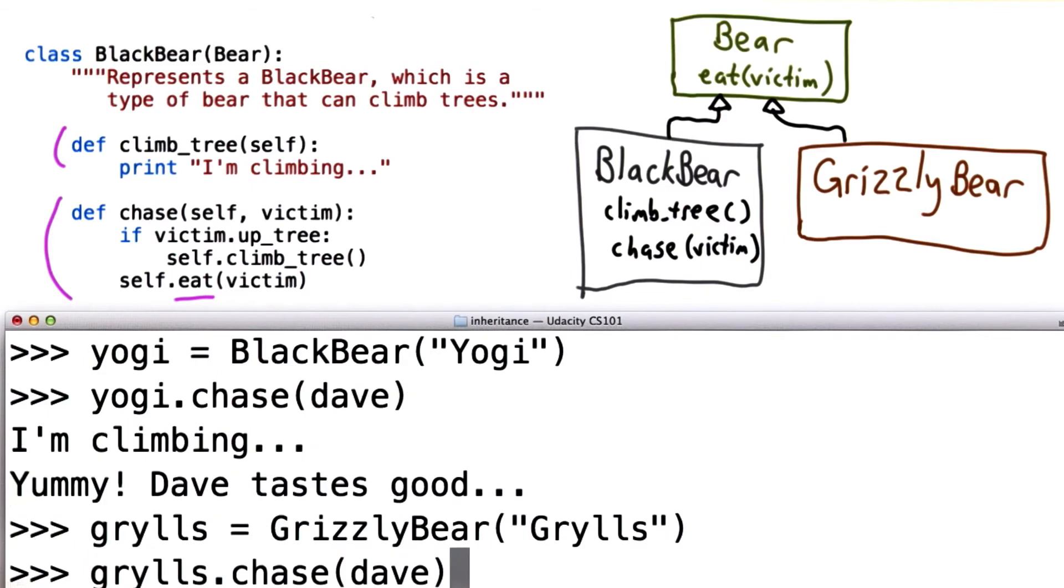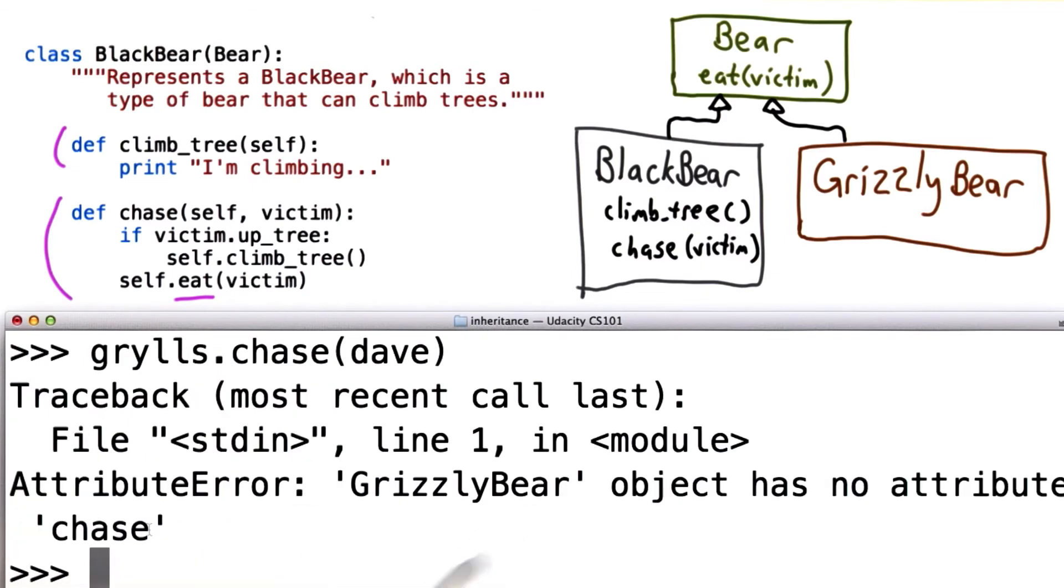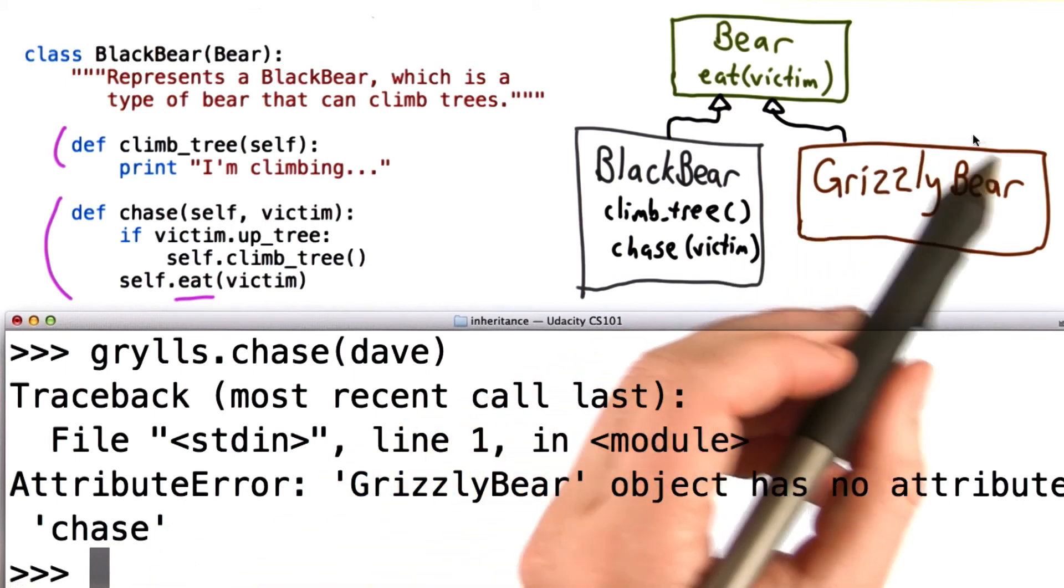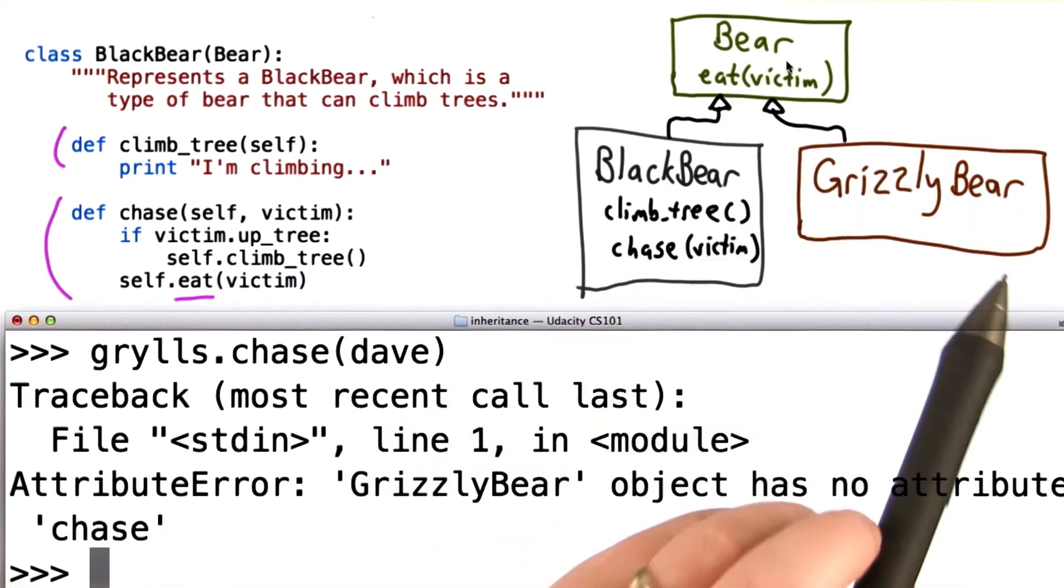If we create a GrizzlyBear and have it try to chase Dave, we get an error. We have not defined the chase attribute for GrizzlyBear, and it doesn't inherit it from BlackBear since its base class is Bear. It's not a subclass of BlackBear.